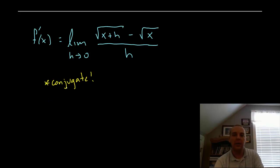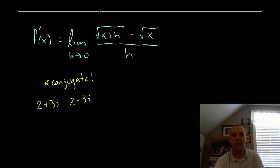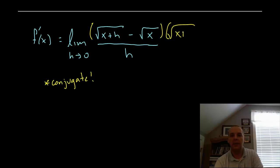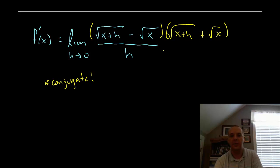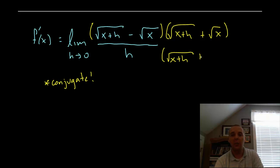The conjugate of an expression is the same two terms — like a binomial — with the sign in the middle changed. For example, if you had 2 plus 3i as a complex number, its conjugate is 2 minus 3i. We're going to do the same thing here with square roots: multiply the numerator by the square root of x plus h plus the square root of x — changing minus to plus. We can't just change it, so we multiply by that expression over itself, which is like multiplying by 1.